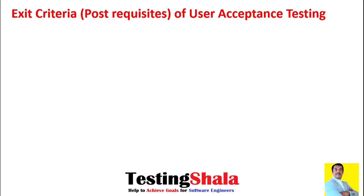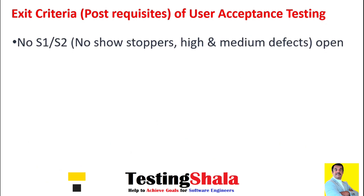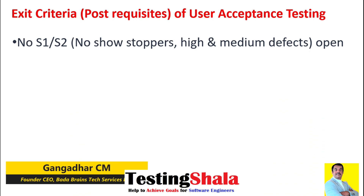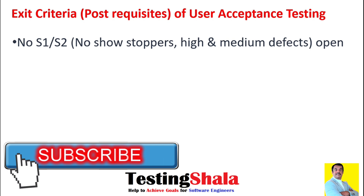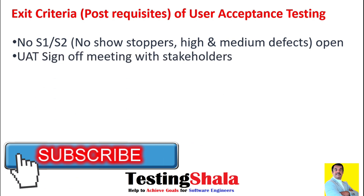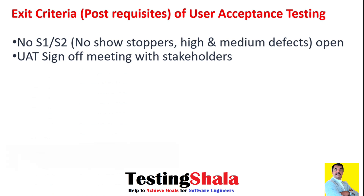Now we will understand the exit criteria. There should be no S1 or S2 defects open from UAT. Any pending S1 or S2 defects should be fixed. If the company policy requires no S3 or medium defects either, then those must also be fixed as part of the exit criteria. Only minor or trivial defects may remain open if the product is still acceptable for release.